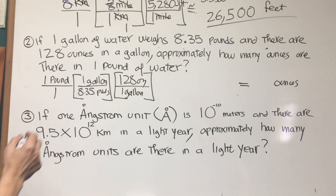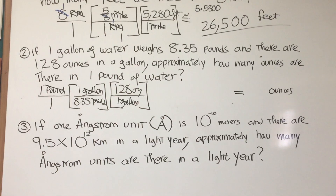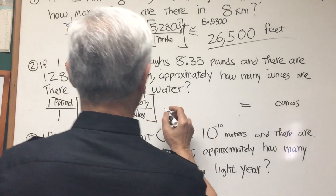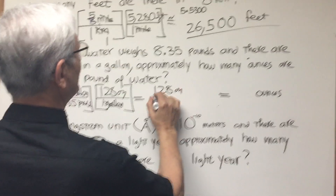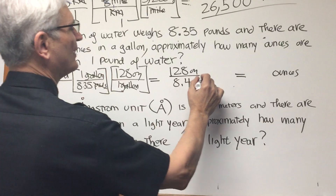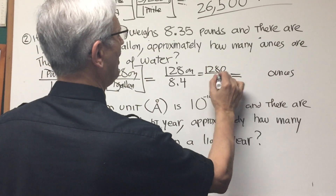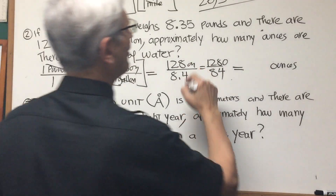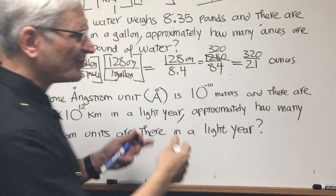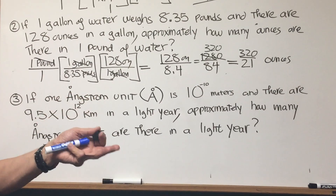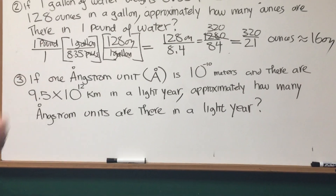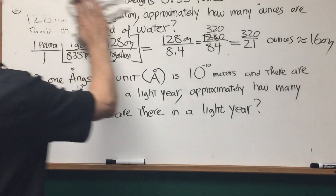The pounds cancel and the gallons cancel. Dimensional analysis tells us we wind up with ounces. Our value is 128 ounces over 8.35. Since we're only looking for an approximate value, let's make this 8.4, and we can reduce that by making it 1,280 over 84. Four goes into the numerator 320 times and four goes into the denominator 21 times, so 320 over 21 is approximately 16. So the answer is approximately 16 ounces per pound of water.